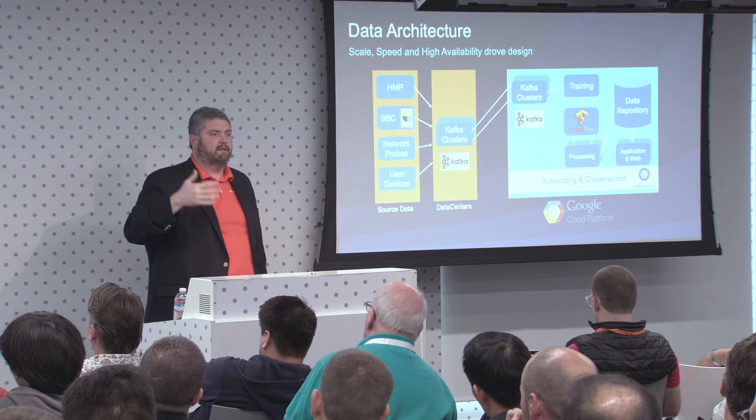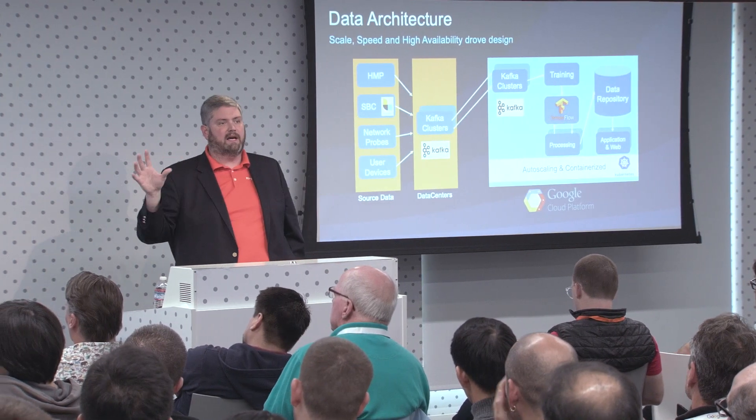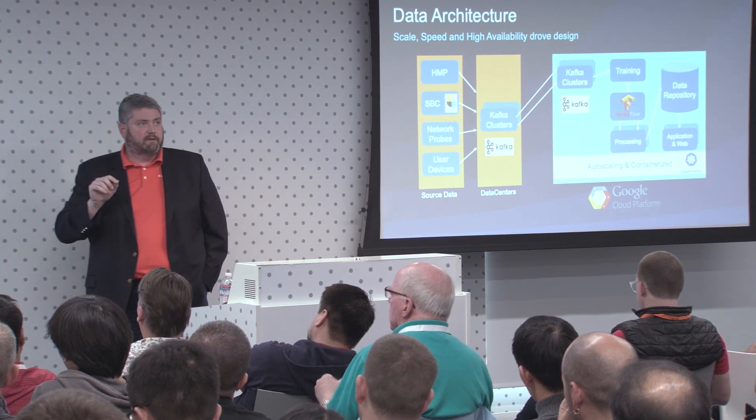We bring that data inside our own network into a set of Kafka clusters — because they're fast, they have permanence when clustered correctly, and they're easy to deploy globally, so they fit well into our architecture. This data also flows into an ops system where we look at global trends on call stats, similar to the previous presentation. But let me drive down to what we started doing here.